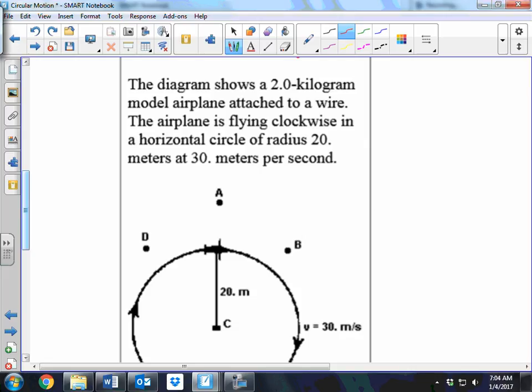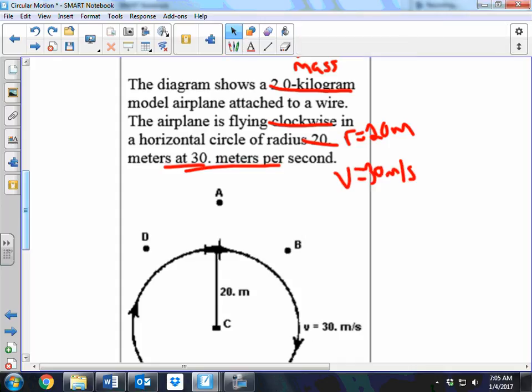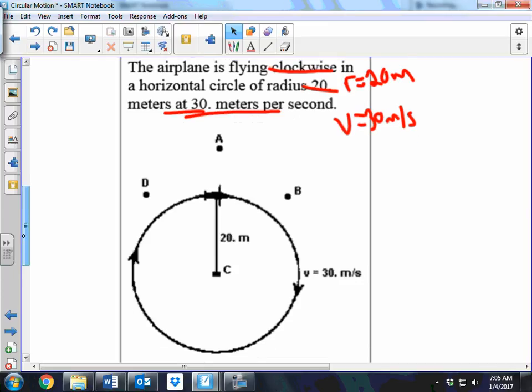The diagram shows a 2 kilogram model airplane attached to a wire. The airplane is flying clockwise in a horizontal circle of radius 20 meters at 30 meters per second. So we can pull out some important information. They give us the mass. Cool. They give us the direction for its circular motion. We care about that. They give us the radius. r is 20 meters. So r equals 20 meters. And they give us the velocity v equals 30 meters per second. Let's see if we need it. But I'll tell you right now, maybe this problem we won't. But I know we will in the future.